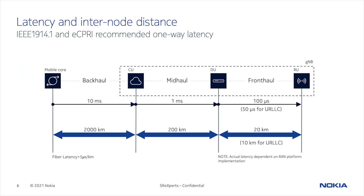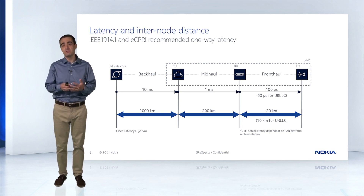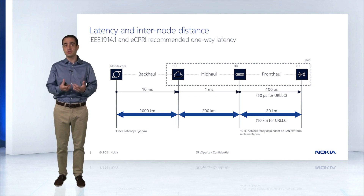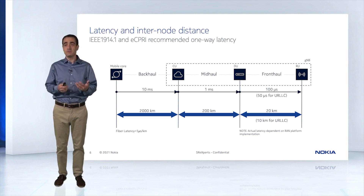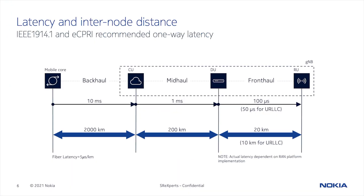This new architecture presents some challenges that were not there in 4G, specifically related to latency. Because we have these interfaces between internal radio components — intra-radio interfaces — some of the latency limits on them are more stringent than we have ever had. The most stringent latency is on fronthaul, where we have 100 microseconds unidirectional latency between the DU and the RU.